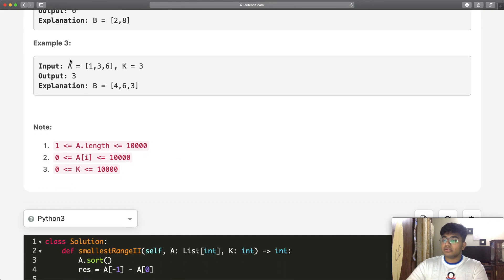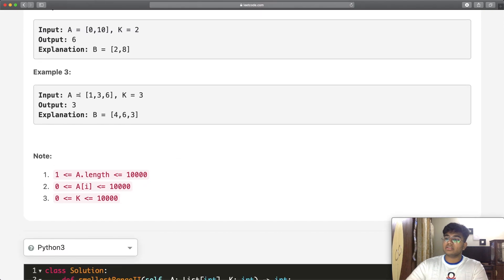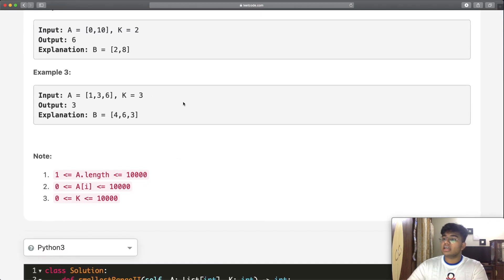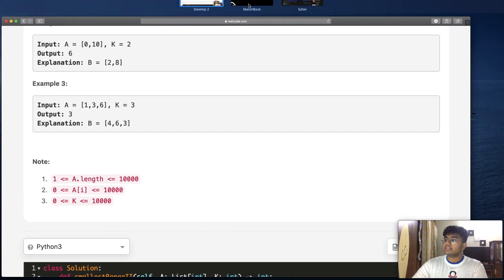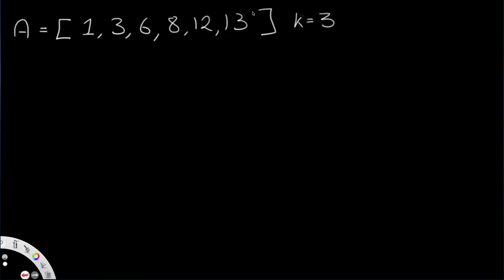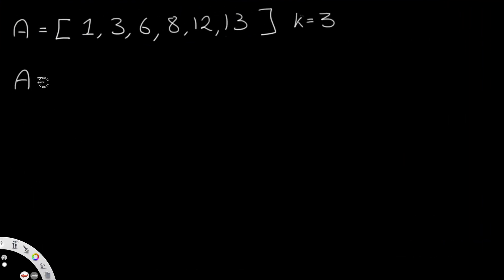Let's go through this example: A equals [1, 3, 6] and k is equal to 3.